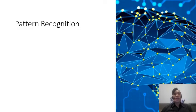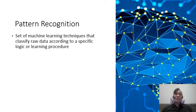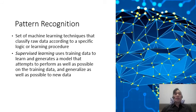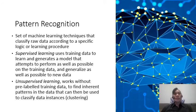Pattern recognition is a set of machine learning techniques that classifies raw data according to a specific logic or learning procedure — you have seen this in correspondence analysis, logistic regression, and cluster analysis. There are two types of learning: supervised and unsupervised. For supervised learning, it uses training data to learn and generate a model that attempts to perform as well as possible on the training data and generalizes as well as possible to new data. In unsupervised learning, it works without pre-labeled training data to find inherent patterns in the data that can be used to classify data instances, just like clustering does.